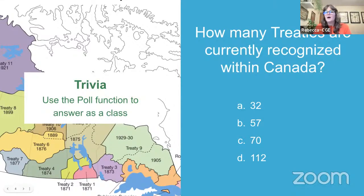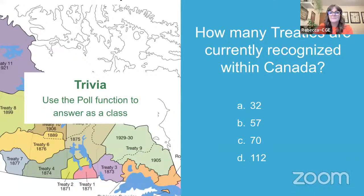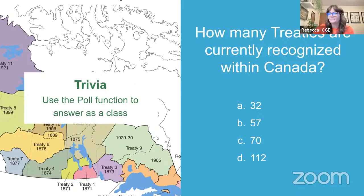I have a little picture here — I tried not to show all of Canada so hopefully it didn't give away the answer. Do we think there are 32, 57, 70, or 112? This one I wasn't sure about until I looked it up. I see we've got some C's, some A's, some D's — this one is the hardest for sure. The correct answer is actually C — there are 70 recognized treaties within Canada.